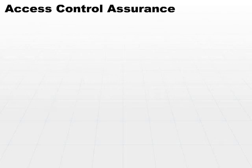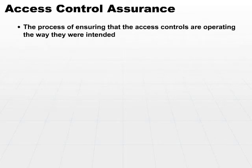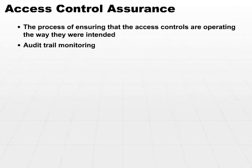Access Control Assurance is the process of ensuring that your access controls are operating the way that they were intended to operate. We start off with audit trail monitoring. You have various types of audit trails and audit logs around your system, and it's important to have an awareness of what's there and make a decision on what type of events that you want to actually track.